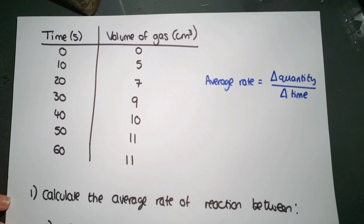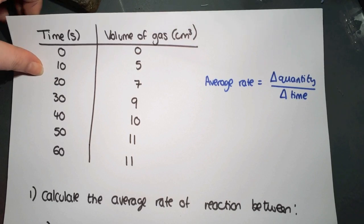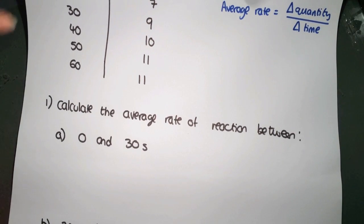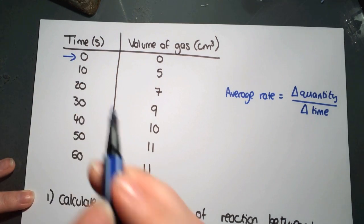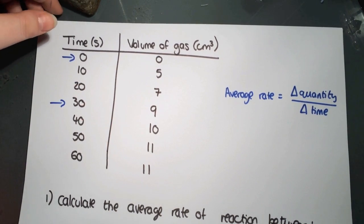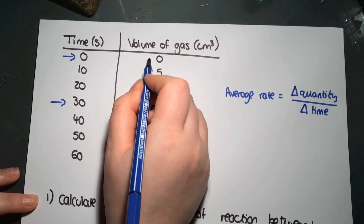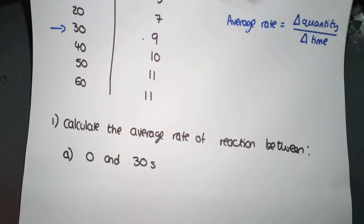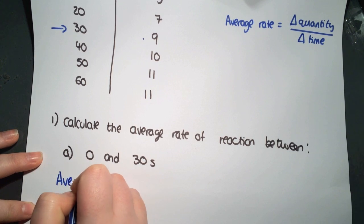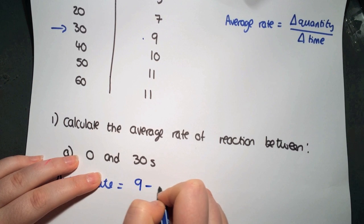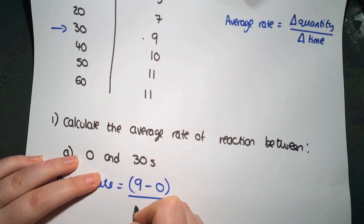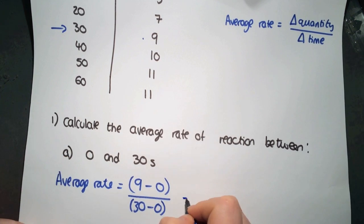The first question here asks us to calculate the rate of reaction between two times. The first set of times is 0 and 30, so we're looking at 0 seconds and 30 seconds. So our change in quantity is going to be between 0 and 9. So we write out average rate equals 9 minus 0 divided by 30 minus 0. So that gives us 9 divided by 30,